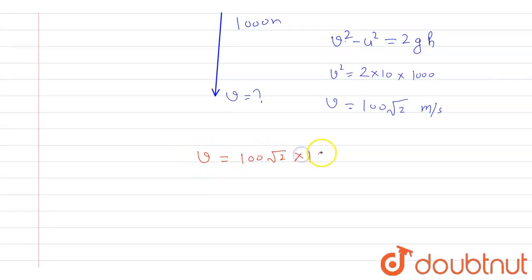So this is 100 root 2 into 18 by 5. When we calculate this we get the velocity in the form of 509.83 and that is nearly equal to 510 kilometer per hour.